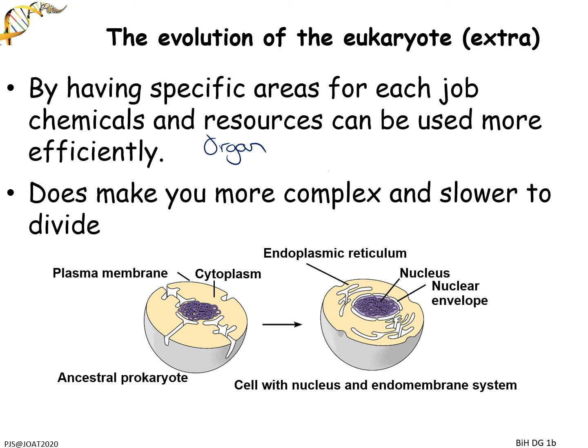Prokaryotes do make cells more efficient in certain ways. The other trade-off is if something goes wrong with one of these organelles inside a cell, you have no backup because it's not distributed through the cell. Think of it from our point of view - our kidneys do all of our filtration. If your kidneys stop working, you have no backup. The organ that does that job is the only organ that does that job.